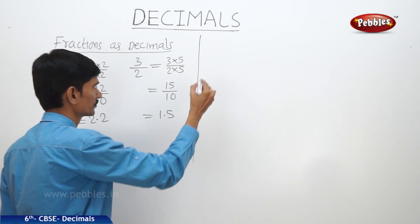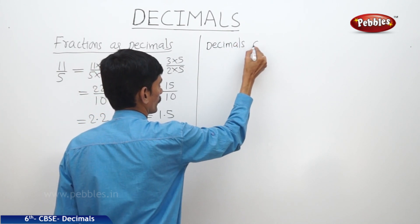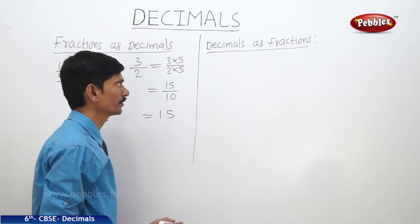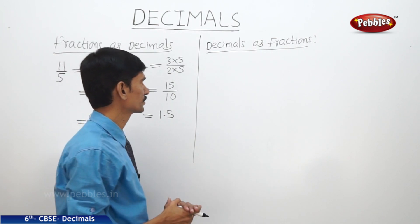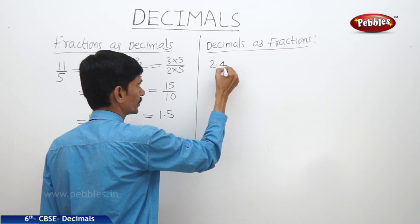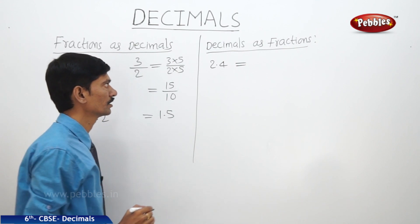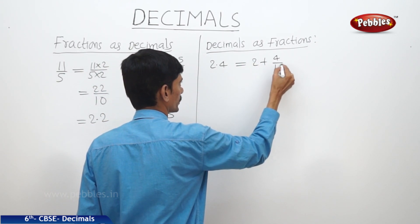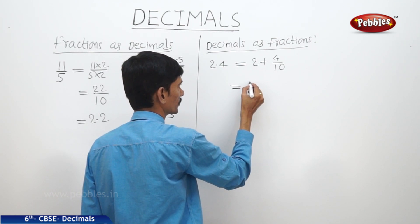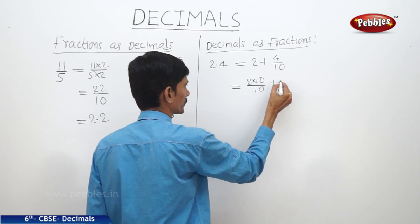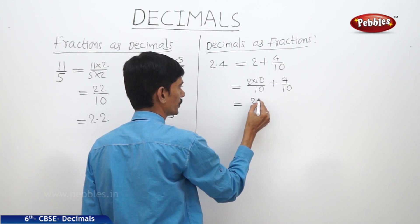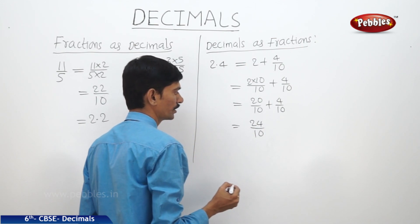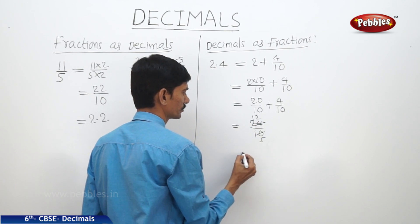Now let us look at decimals as fractions. Any decimal number can be written as a fraction. For example, two point four equals two plus four by ten. Writing two as twenty by ten, we get twenty by ten plus four by ten equals twenty-four by ten. In simplest form, this gives twelve by five.